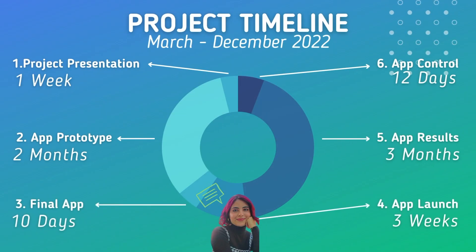We have established six stages to execute our project. First, a project presentation to our stakeholders, which will last one week. Second, the app prototype development, which we estimate will last two months. After that, we want to develop the final app, which will take approximately ten days. Then, the app launch, which will take around three weeks. After the app has been launched, we're going to measure its results over around three months. And lastly, we're going to develop control or improvement strategies over the next twelve days after that.